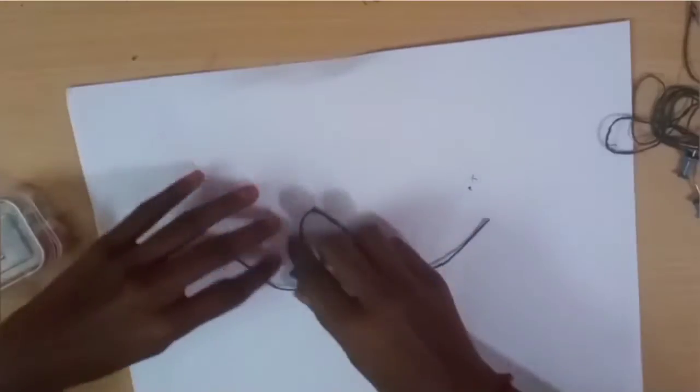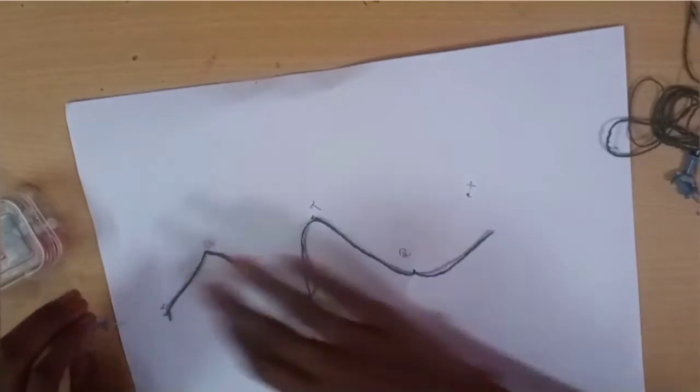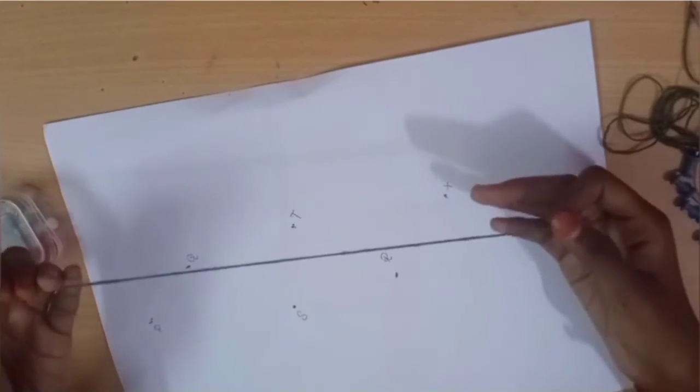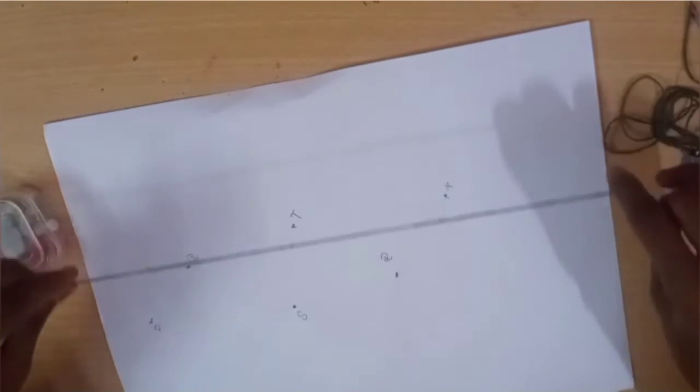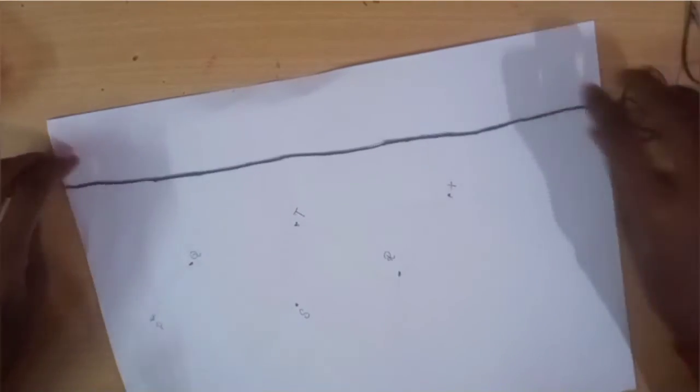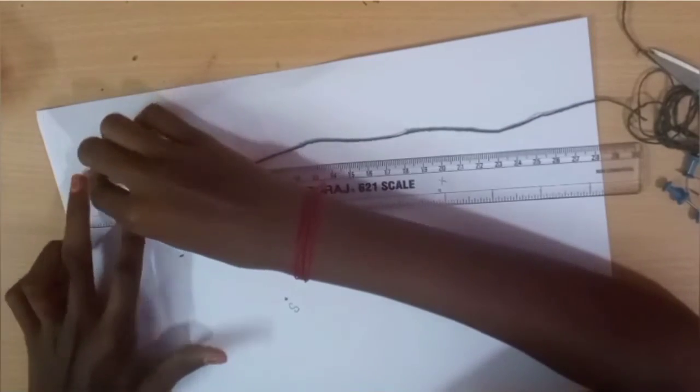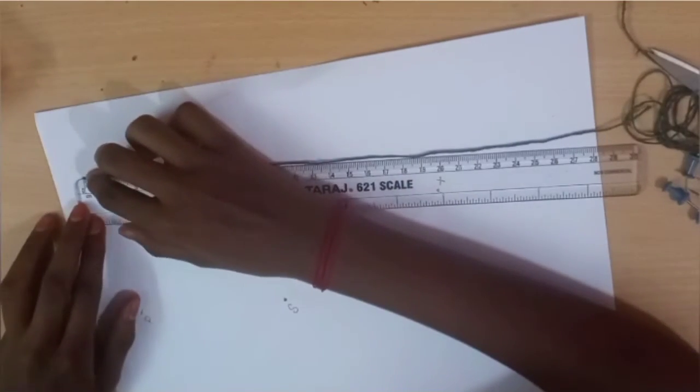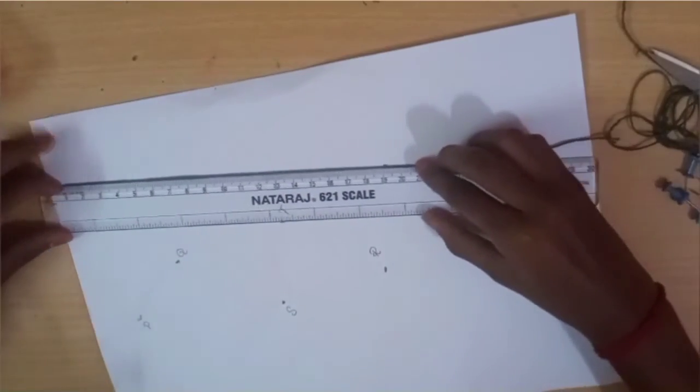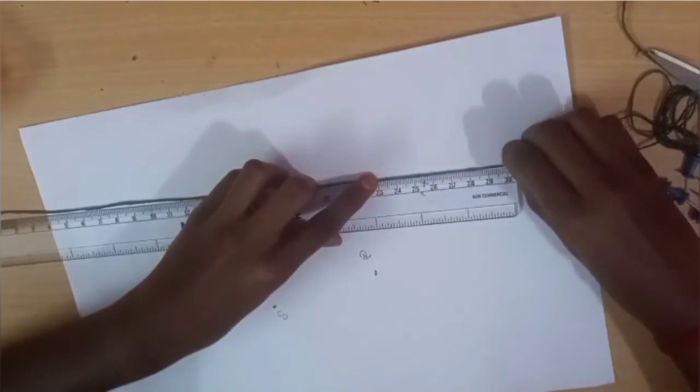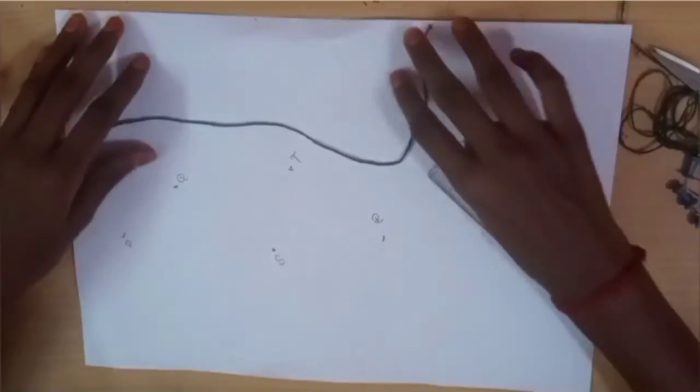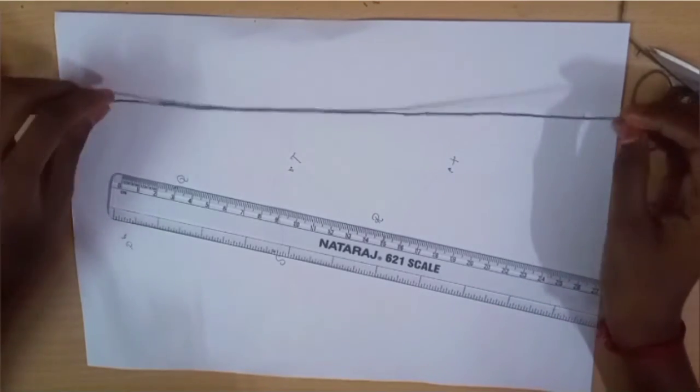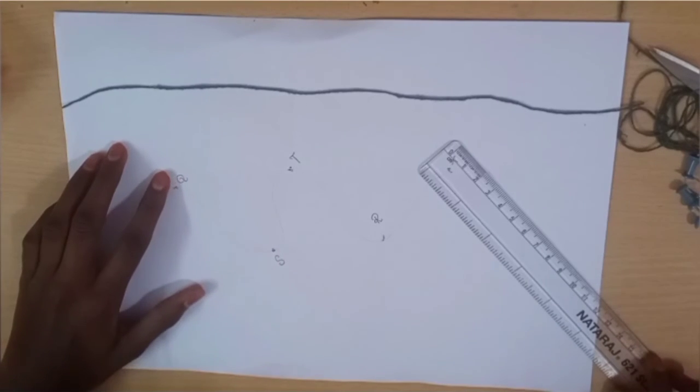The length of the thread is 31 centimeters, so the length of the curved line is 31 centimeters.